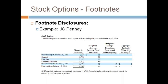The weighted average remaining contractual term is the amount of time employees can wait until they exercise their option and purchase stock. Options generally have a vesting period and then a time after they are earned until they expire and can no longer be exercised. The intrinsic value is the gain employees would earn on each share of stock purchased — it is the difference between the exercise price and the current market value of JCPenney stock.